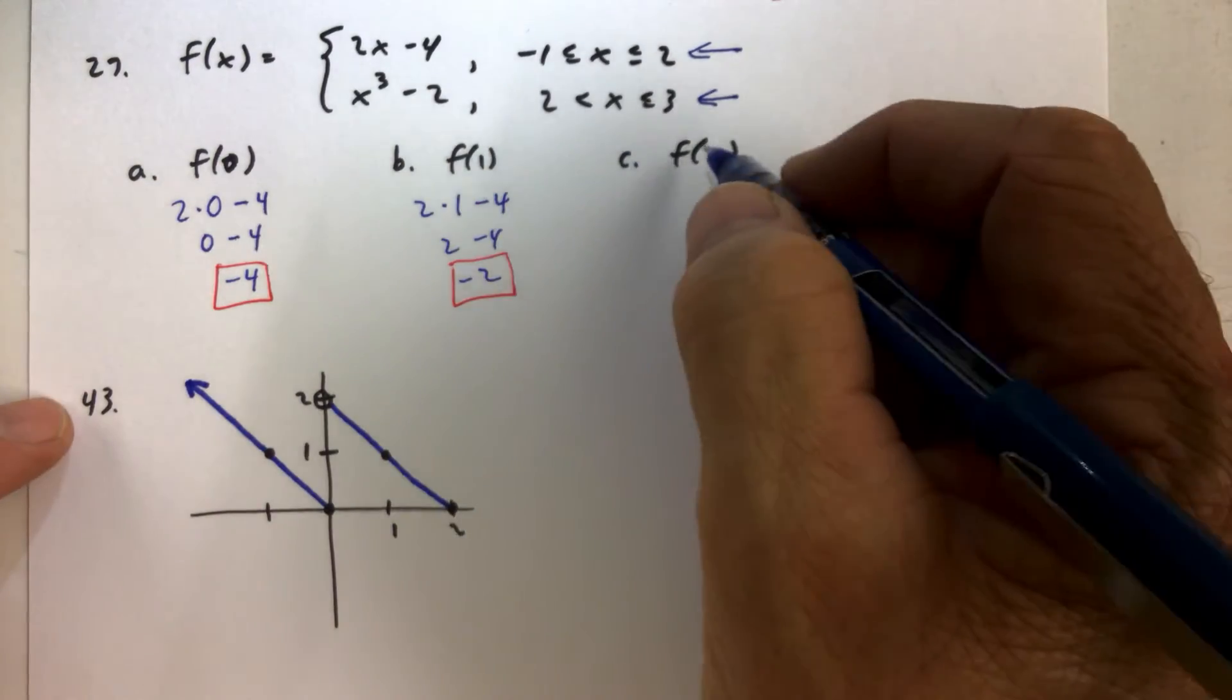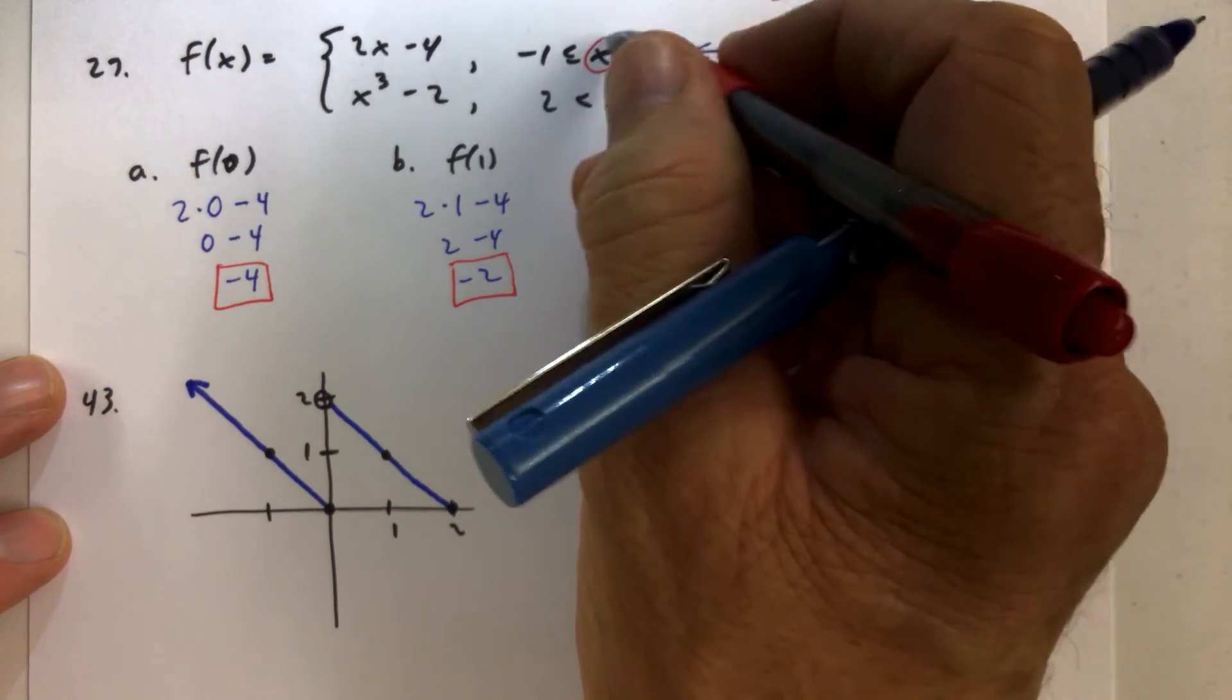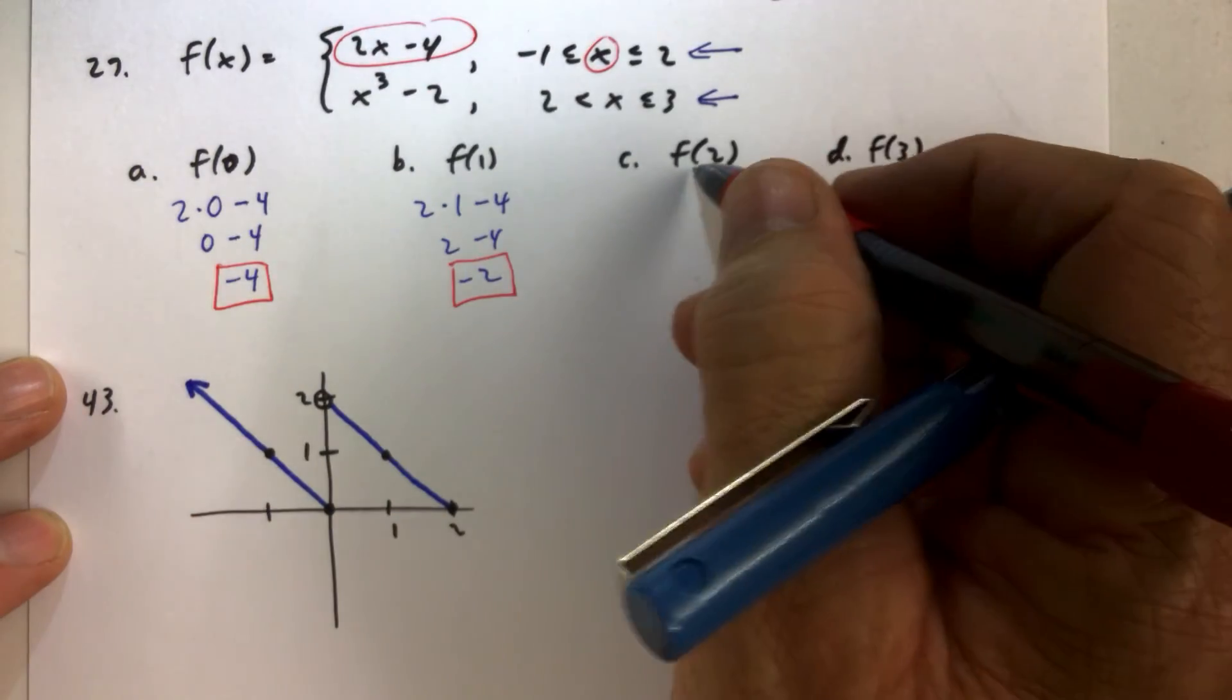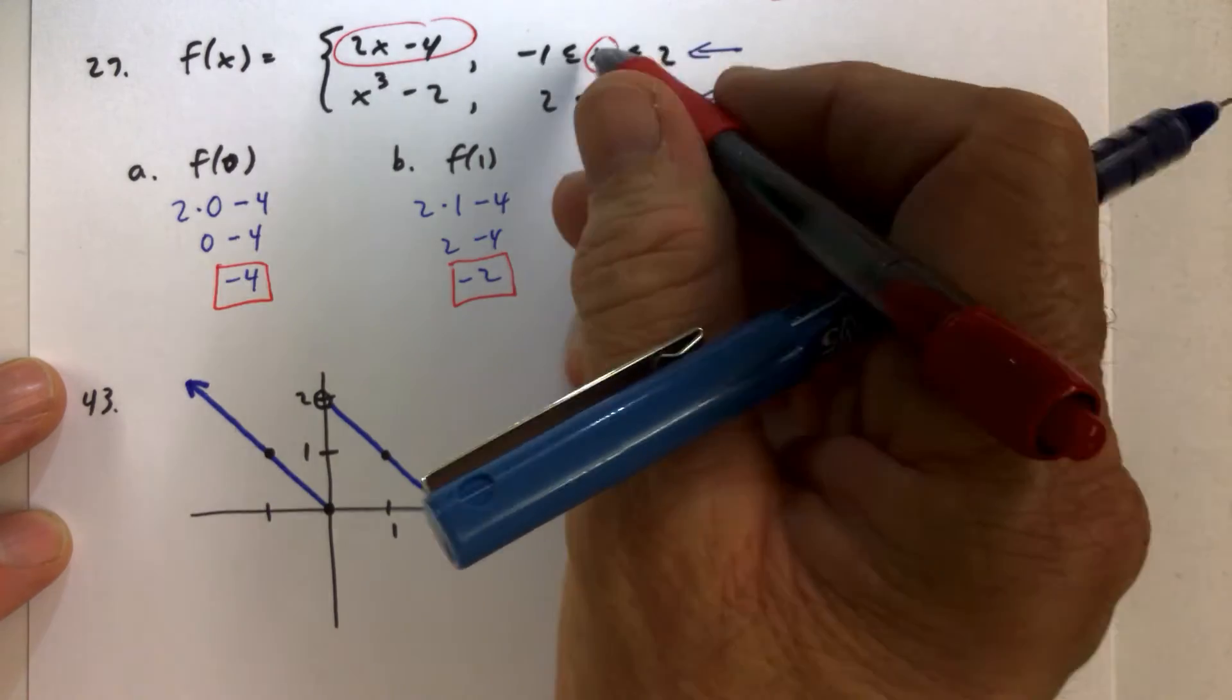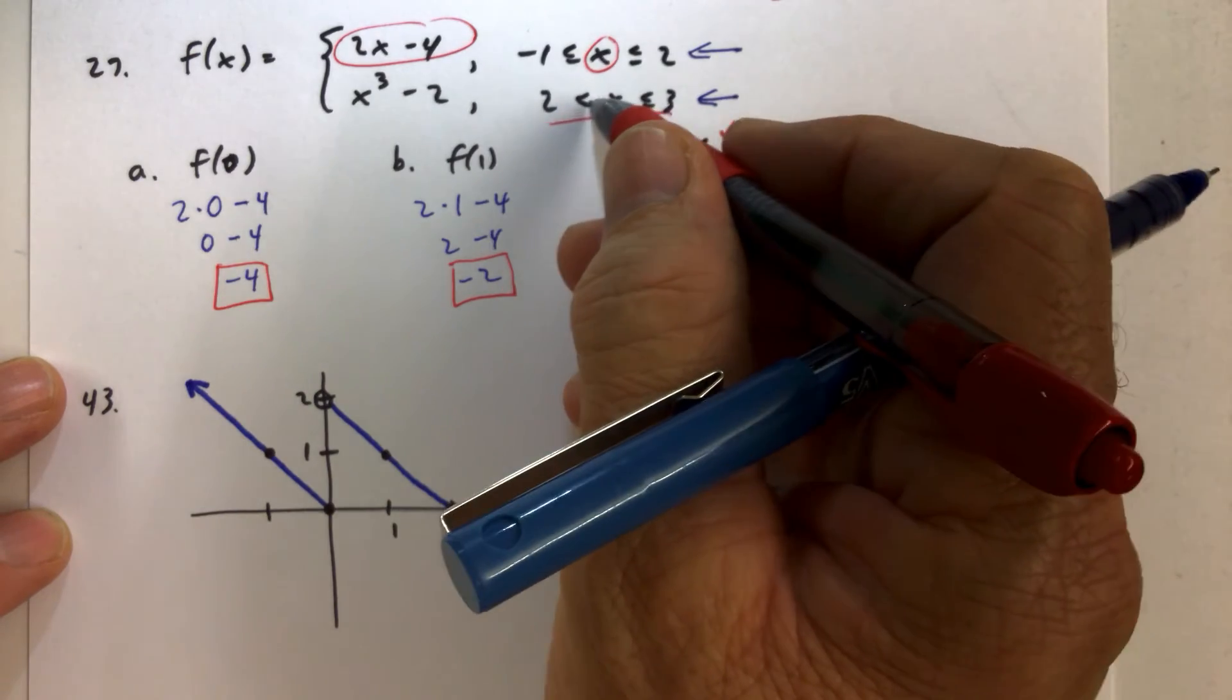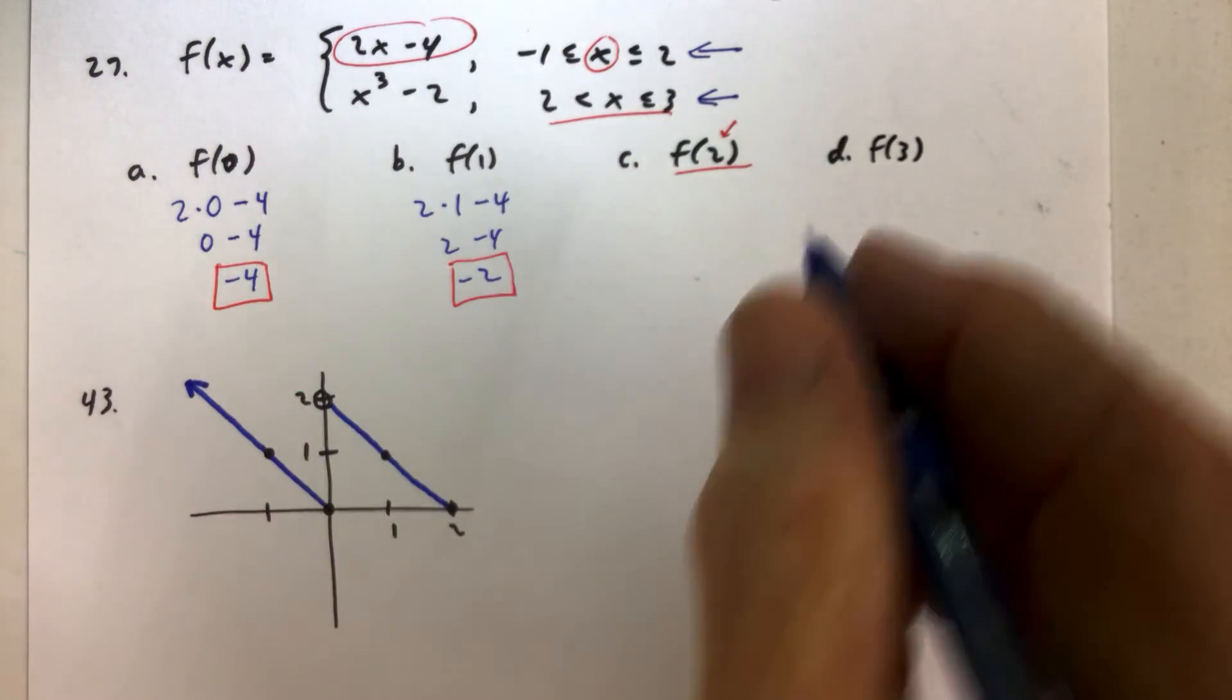f of 2. Well, here we have an option, kind of an option, at first glance. But 2 right there is less than or equal to 2. So 2 is equal to 2, so we're going to use this first piece if the input is in between negative 1 and 2, including 2. This piece here, we would only use this piece as soon as our input gets bigger than 2, not also equal to 2. So we can't plug 2 into both pieces. Remember, a function, you put one thing in, you get one thing out.